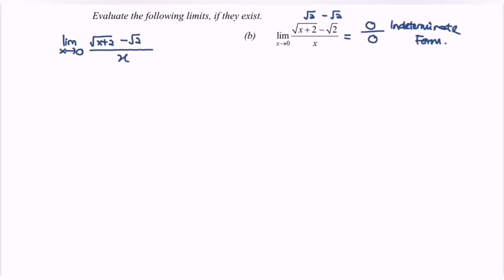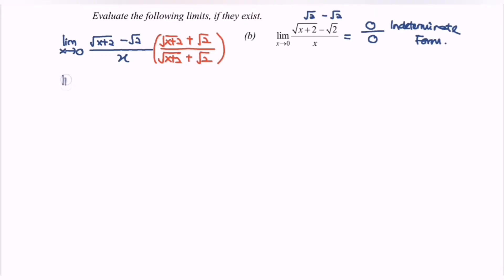I am going to multiply by the conjugate, which is (square root of (x plus 2) plus square root of 2) over (square root of (x plus 2) plus square root of 2). After expanding, the limit when x approaches 0 gives us x plus 2 in the numerator from the difference of squares.